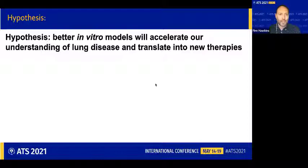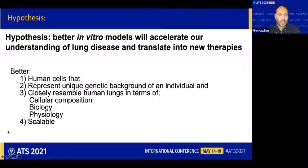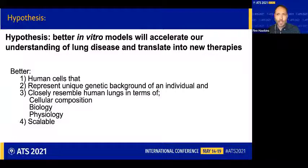By better in vitro models, we think of things like cells that are human, that can represent the unique genetic background of an individual or a patient group, and that resemble as closely as possible the actual lungs and tissue of interest in terms of cellular composition, biology, and physiology. From a practical perspective, it would be highly desirable that this is a pliable system that is scalable.